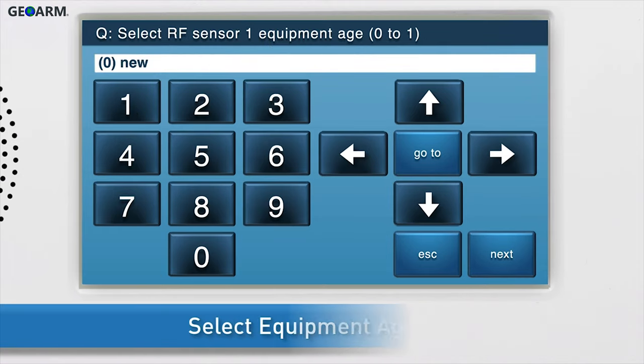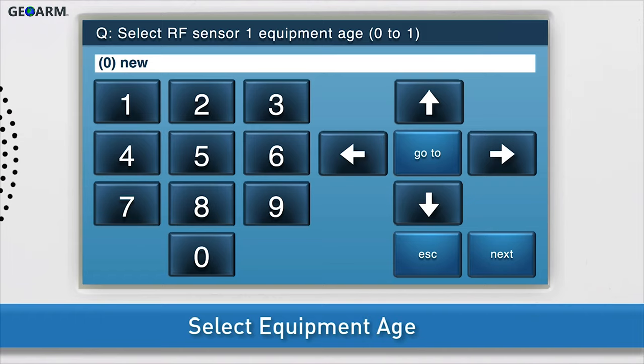Select the equipment age. Since this is a new 2GIG contact, leave the selection as 0 new. Press the down arrow to go to the next sub-question.